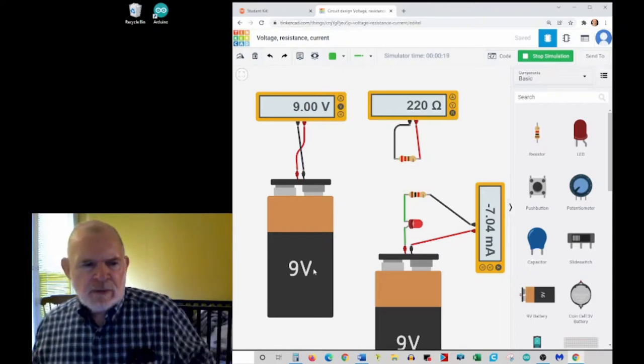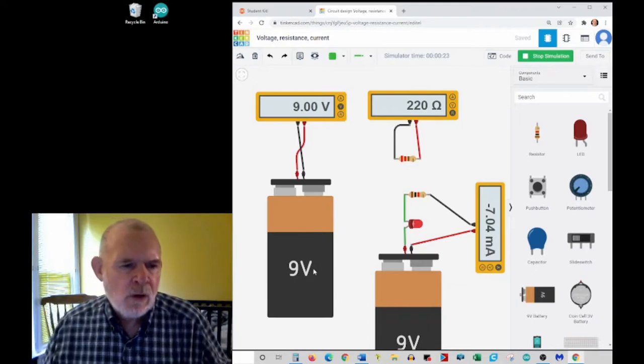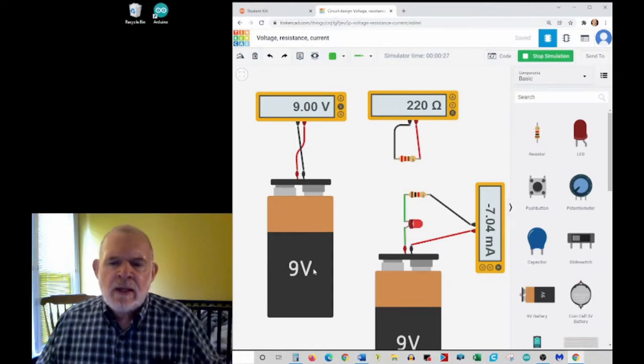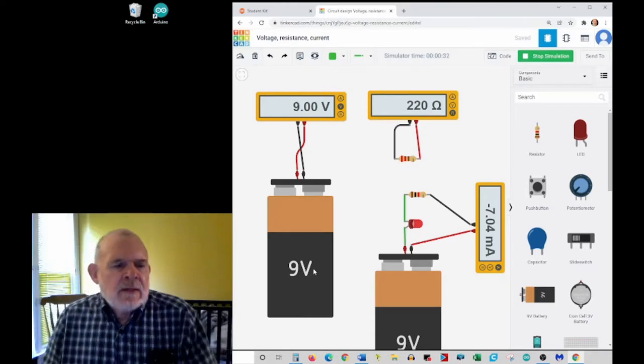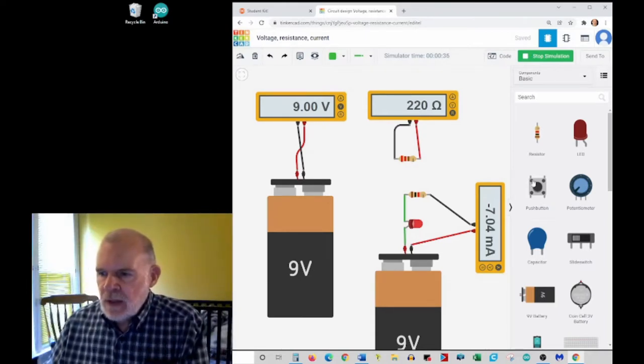Just to mention, there are two kinds of voltage: direct current voltage and alternating current voltage, AC and DC. In these lessons, we're only going to be using direct current, DC. So we won't mention AC very much at all.